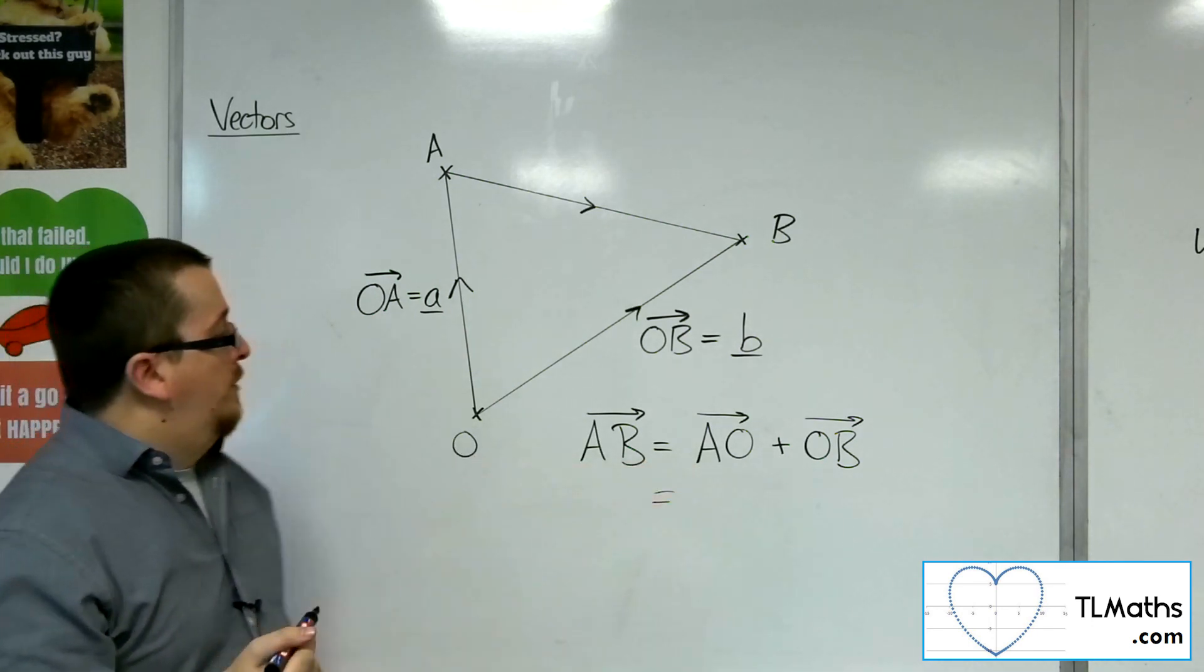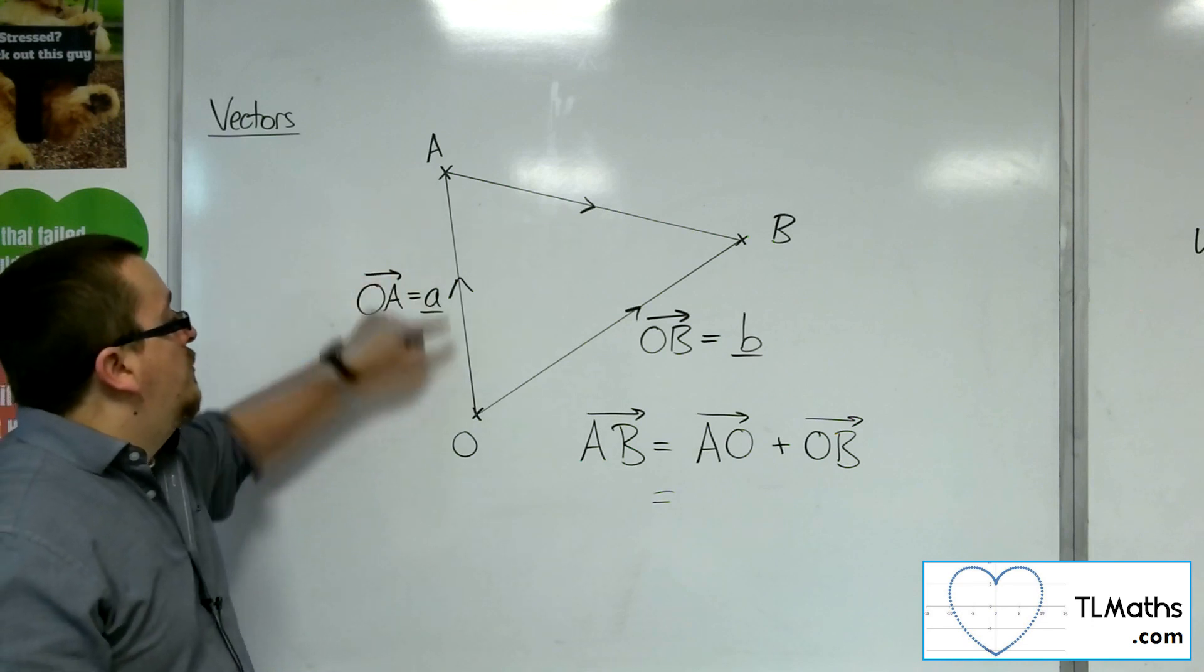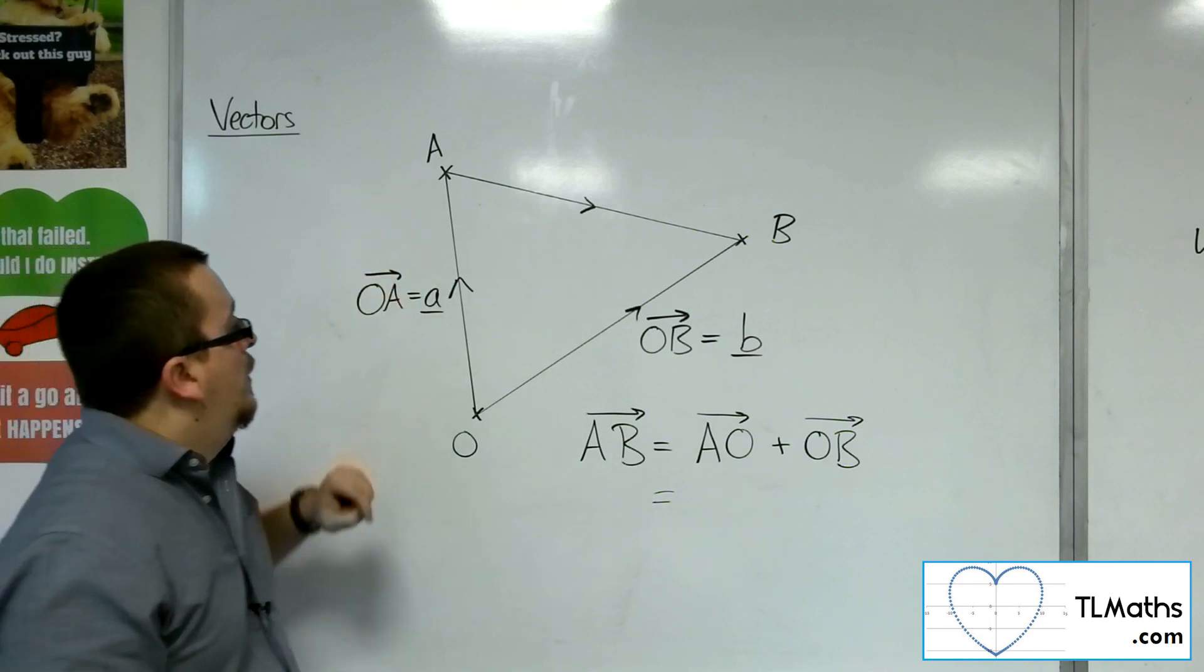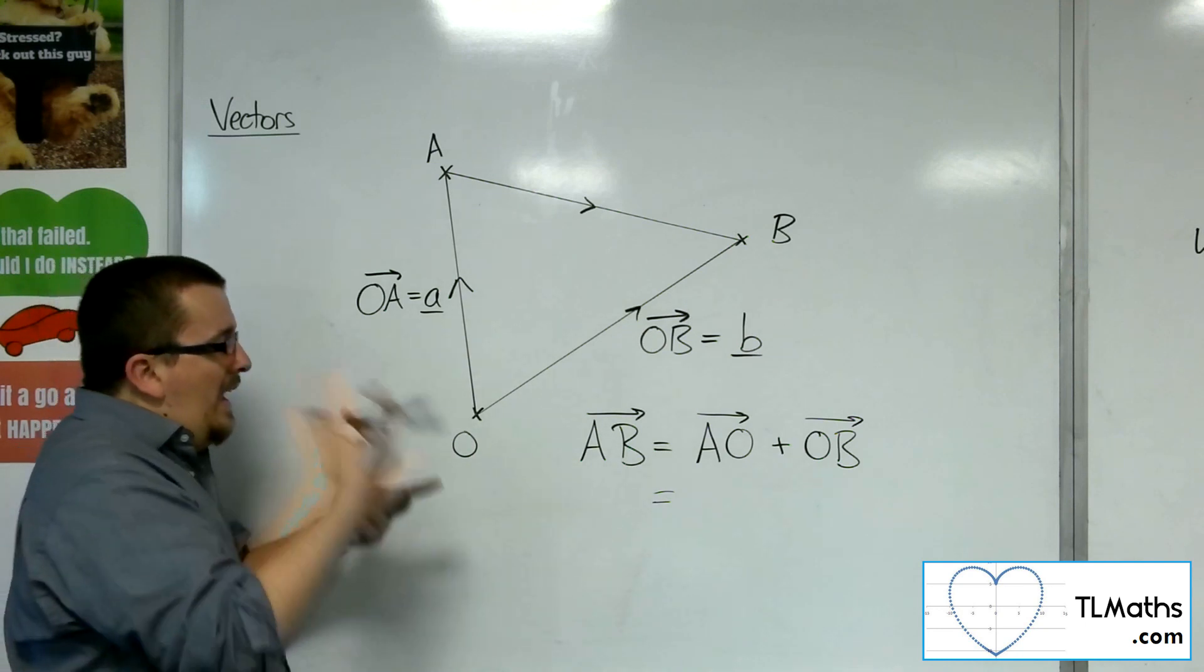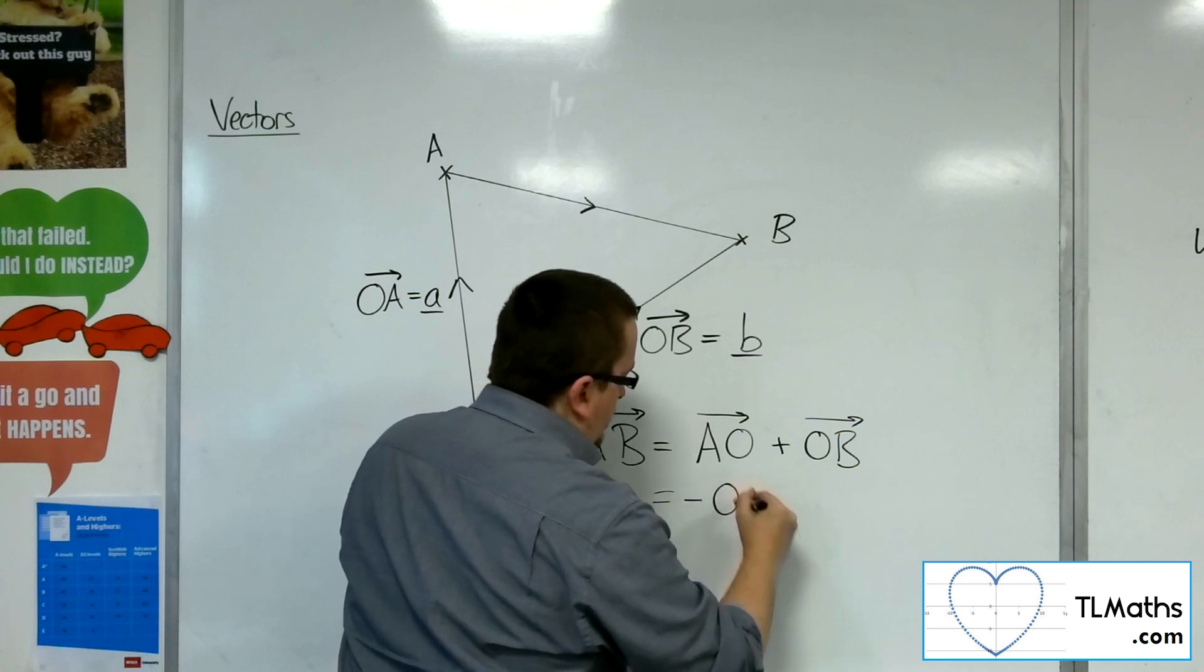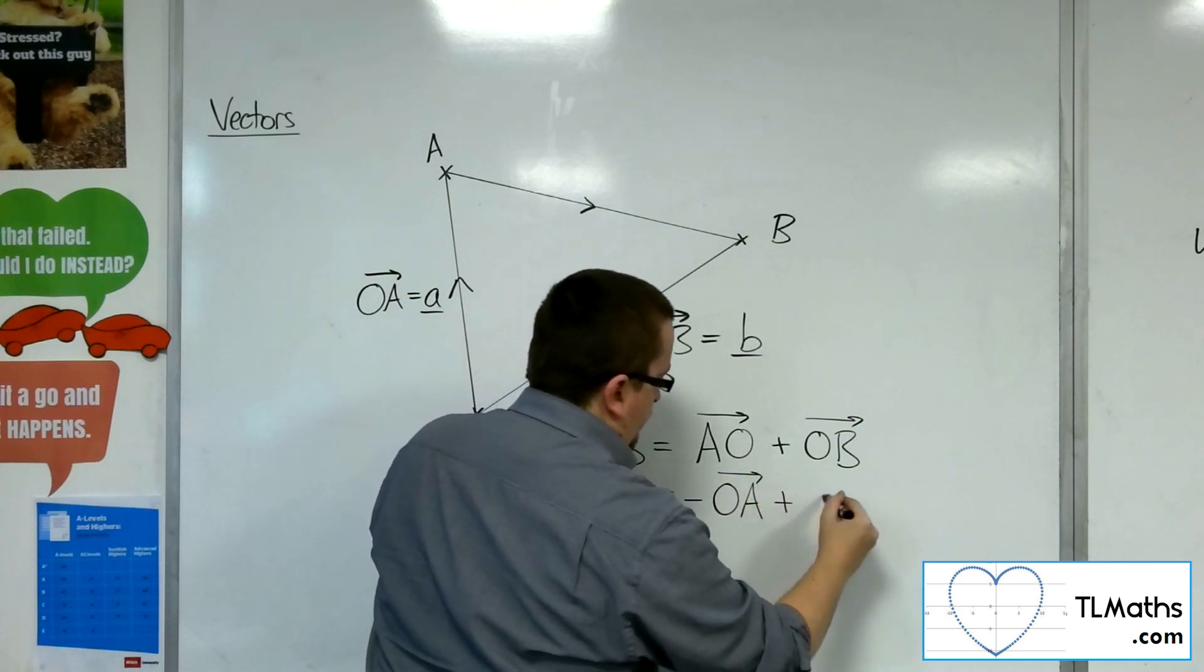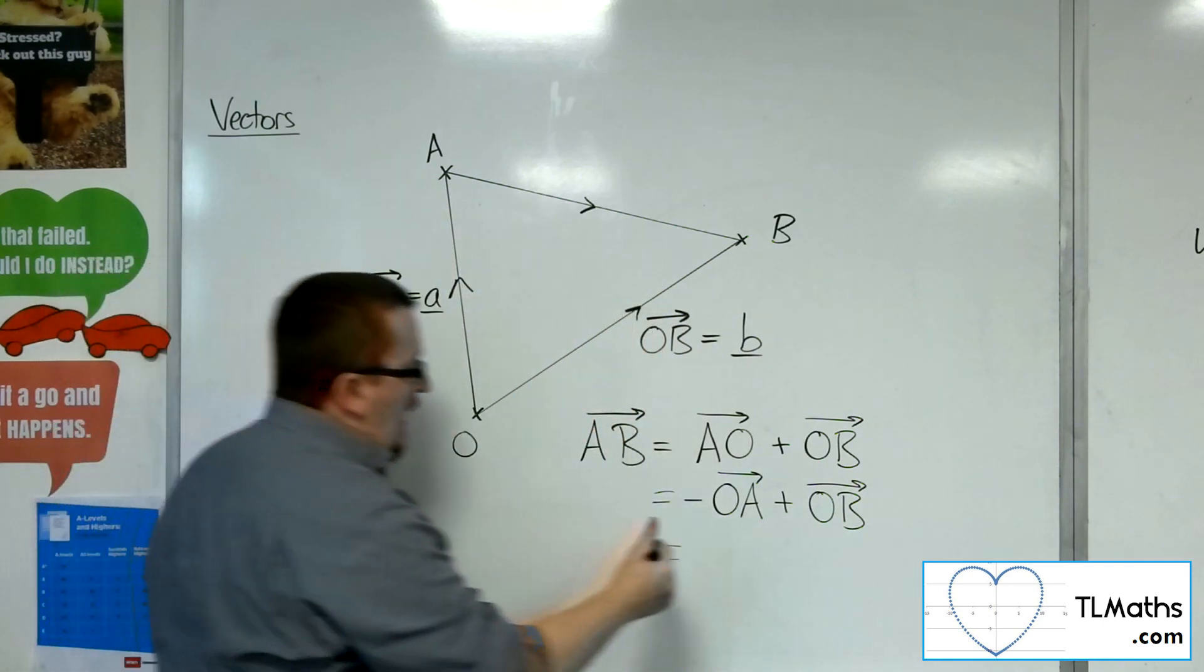Now A to O is the reverse direction of O to A. So I'm backtracking along that arrow. So if I reverse the direction of a vector, what happens is I get the negative of that vector. So that is minus A.